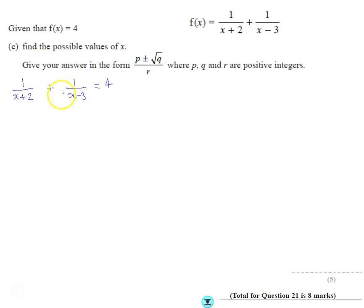So I want to sort these fractions out, I want to write this down over a common denominator. So what I'm going to do is, this first fraction I'm going to multiply the top by x minus 3 and the bottom by x minus 3. The second fraction I'm going to multiply the top by x plus 2 and the bottom by x plus 2.